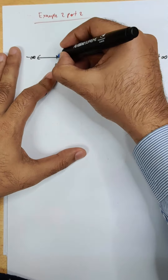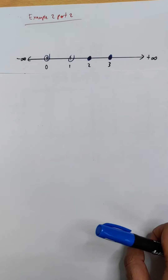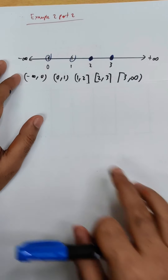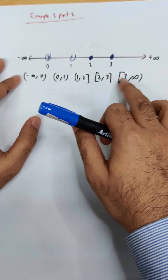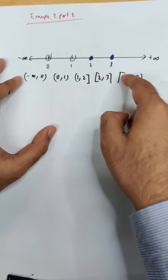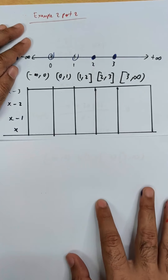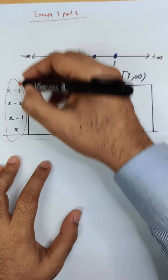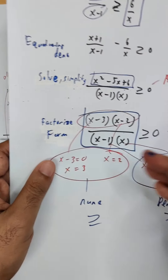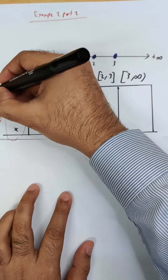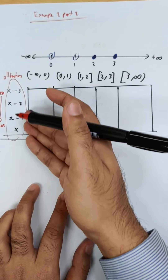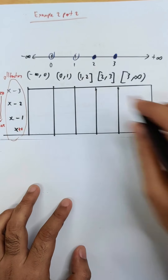So for 0 and 1 we use open brackets, and for 2 and 3 we use closed brackets. This gives intervals: negative infinity to 0 (open), 0 to 1 (open), 1 to 2 (open-closed), 2 to 3 (closed-closed), and 3 to infinity (closed-open). Now draw the table with all factors listed from least to greatest on the left side.